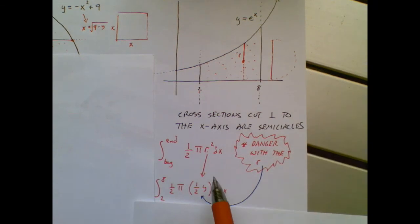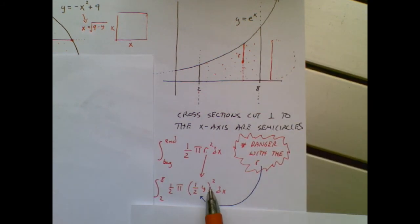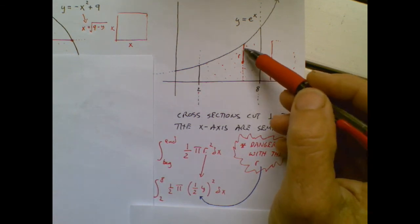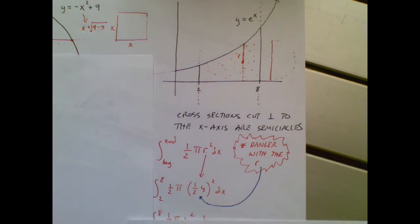So I only need half of that distance for my radius. So instead of writing y squared, I write 1 half y squared. That's really tricky. In all your volumes of revolution problems, the thinking would lead you to knowing that this entire distance was the radius. So just be very careful there.